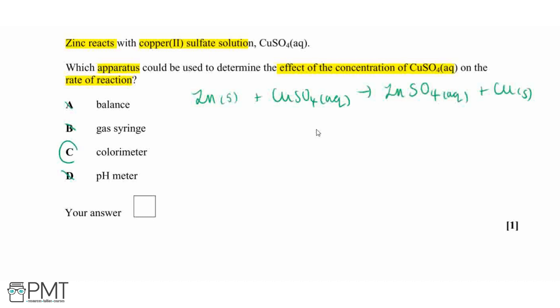So this leaves a colorimeter as our answer, which is also appropriate for this reaction because our copper sulfate is a blue solution because our copper is a transition metal. And we know that a property of our transition metals is that they produce colored solutions for their compounds.